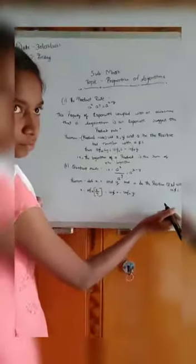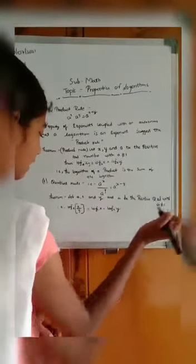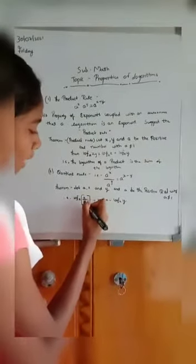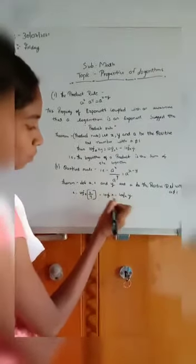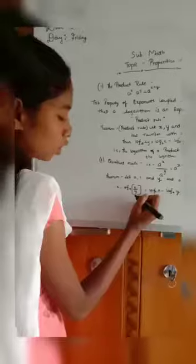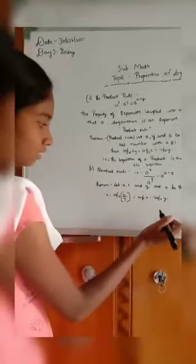equal to 1, a is not equal to 1, so that is log a, a by a, a by y whole square is equal to log a x minus log a y. So here when we are dividing, here subtracting.